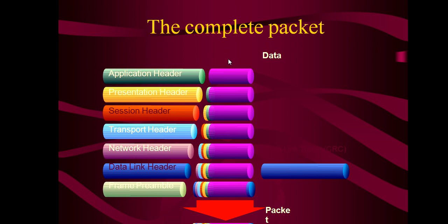When a packet moves from one machine to another, it follows certain standards or rules — that is called the OSI model. The OSI model is a type of standard used for network design. Other than that, we have the TCP or DoD model, which was designed by the Department of Defense of the US. The OSI model contains different layers, each with its own functionality: application layer, presentation layer, session layer, transport layer, network layer, data link layer, and physical layer.